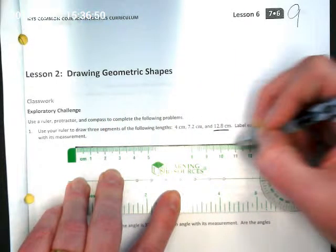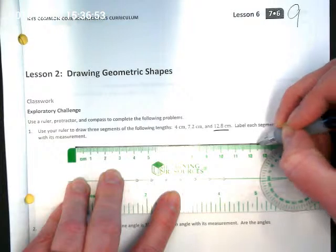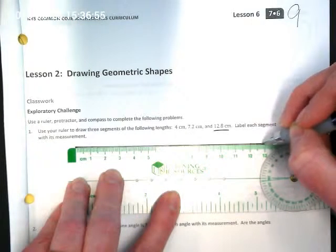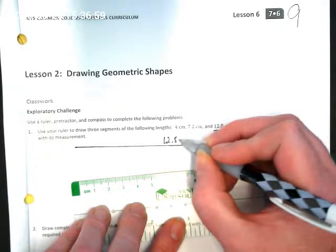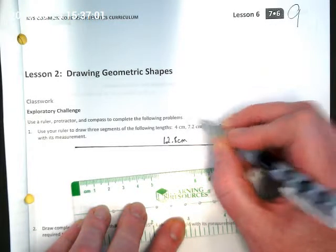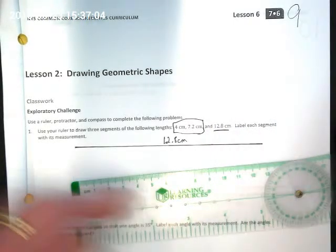We're going to go past 12. That's 12, 5, 6, 7, 8. And then I'm going to label it 12.8 centimeters. And I'll leave it to you to go back and do the 4 centimeters and 7.2.